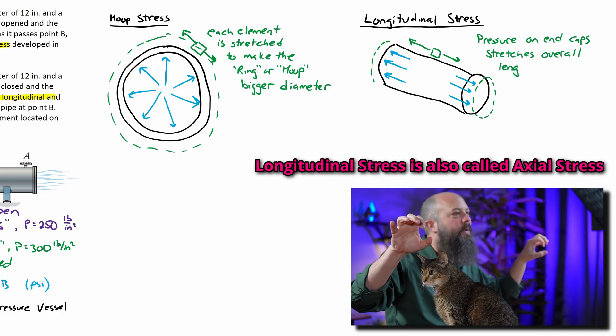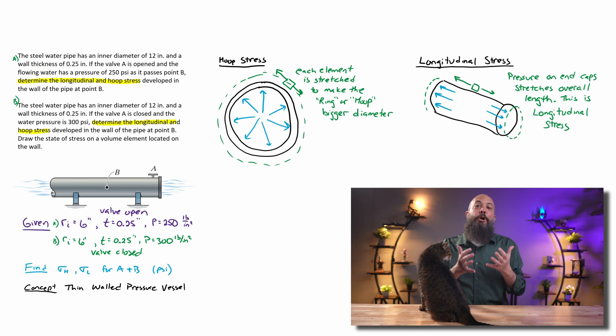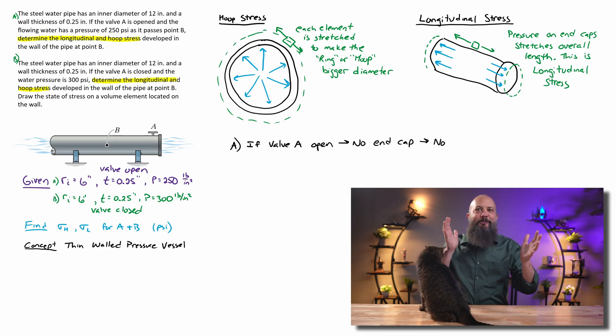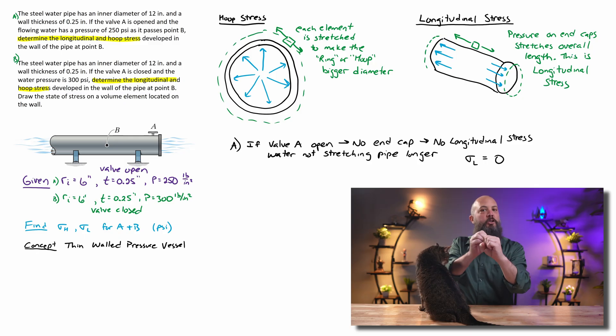So if the valve is open and there is water flowing all the way through the pipe, then it's easy. The longitudinal stress will be zero because all the water is just flowing freely through the pipe. There's nothing holding it back that's causing that sort of stretching motion.